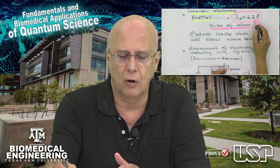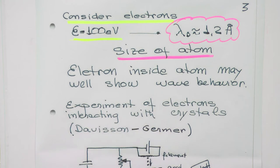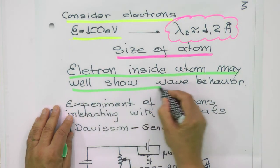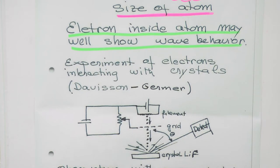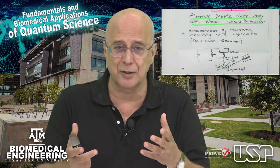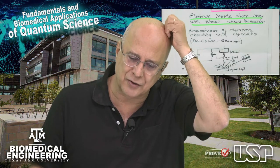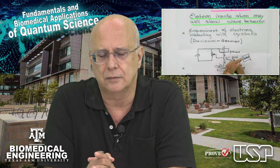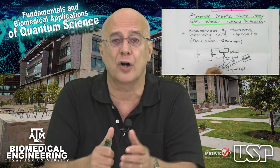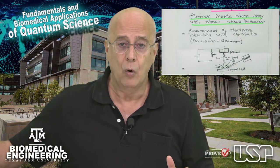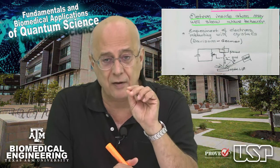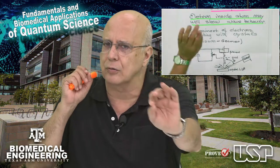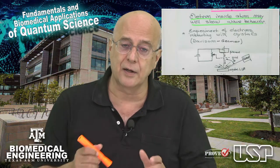Therefore, we cannot avoid treating the electron as both a particle and a wave when we are inside the atom. Quantum mechanics was mostly established to explain the atom — and that is the reason. The wavelength of the electron is on the same order as the atomic structure. There were many experiments proving that electrons traveling in a beam really behave like waves, and those are the experiments we are going to examine now.